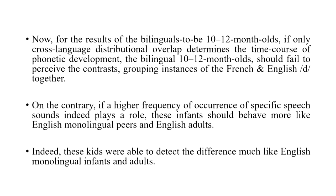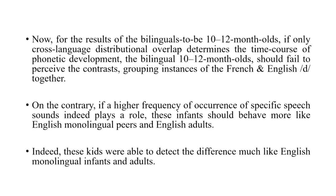For the ten to twelve month old simultaneous bilinguals, if only cross-language distributional overlap determined the time course of phonetic development, these bilinguals should fail to perceive the contrast and would group the instances of French and English 'the' together. On the contrary, if frequency really matters — and because in English the dental fricative is much more frequent than the alveolar variant — these bilinguals should follow the example of English adults and be able to distinguish between the two sounds. And indeed, this is what happened: the bilingual kids were actually able to detect the difference, much like English monolingual infants and adults. So not only statistical distribution, but also the frequency of use of specific sounds in a given language, which is reflected in the input received, also matters.